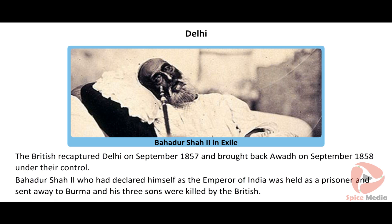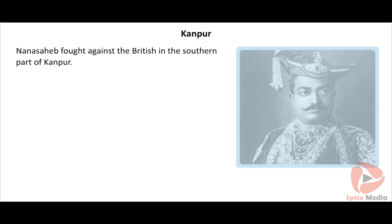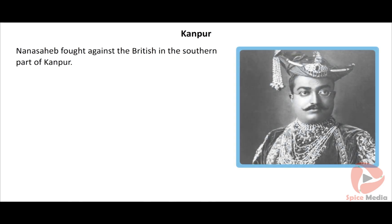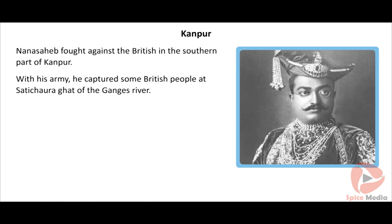Peshwa Baji Rao adopted Nana Sahib as his son — the title Peshwa means a noble Maratha prince. In Kanpur, Nana Sahib was initially in favour of the British but later attacked a British group that had taken refuge in the southern part of Kanpur. Nana Sahib fired and bombarded the group held by General Wheeler in 1857, and the British suffered severe losses. The British were offered a choice to flee at Satichaura Ghat of the Ganges River, which resulted in failure due to conspiracy as both sides fired. This incident is called the Satichaura Ghat Massacre.